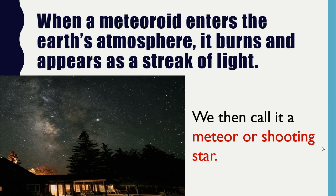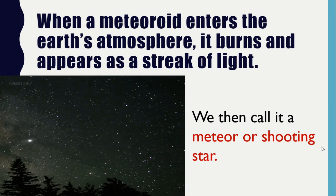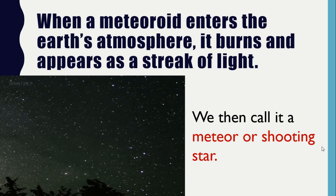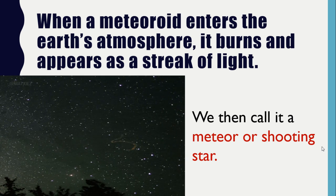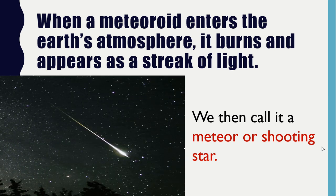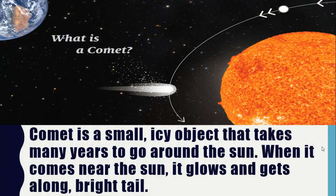Meteors are quite common and you may see one at night. Less common are comets. A comet is a small icy object that takes many years to go around the Sun. When it comes near the Sun, it glows and gets a long bright tail.